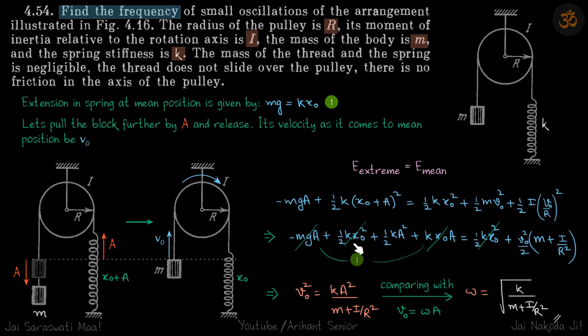Opening this equation, you can see since mg = kx₀, these terms will cancel, and you will get v₀ as a function of a.